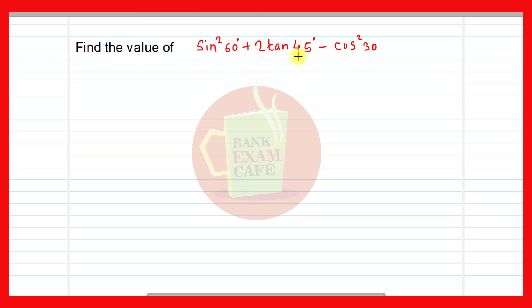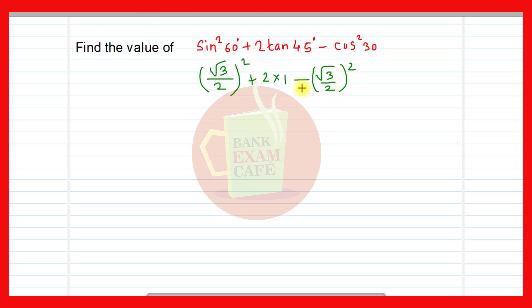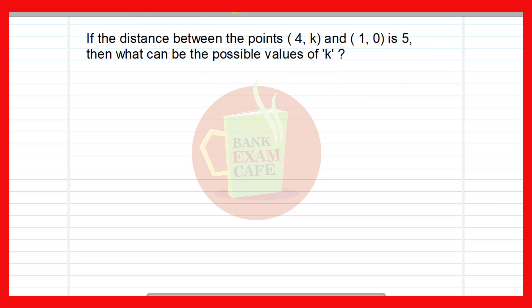Next question: Find the value of sin²60° + 2·tan45° - cos²30°. Substituting values: sin60° = √3/2, tan45° = 1, cos30° = √3/2. So (√3/2)² + 2×1 - (√3/2)² = the two square terms cancel, leaving 2×1 = 2. This is very simple — it's one mark because you must remember the values of sin60°, tan45°, and cos30°.